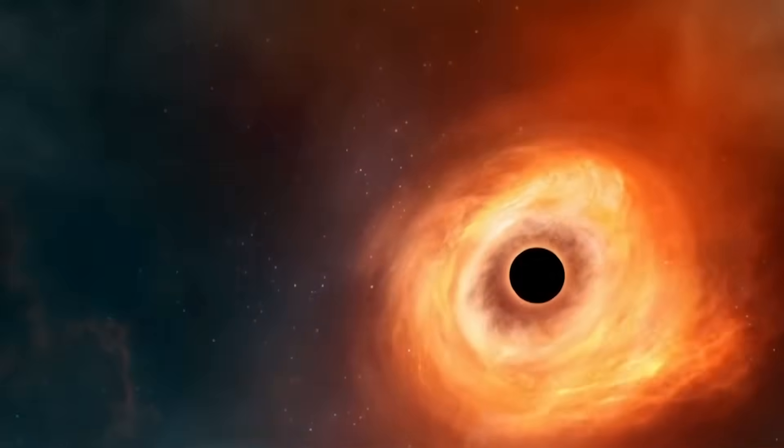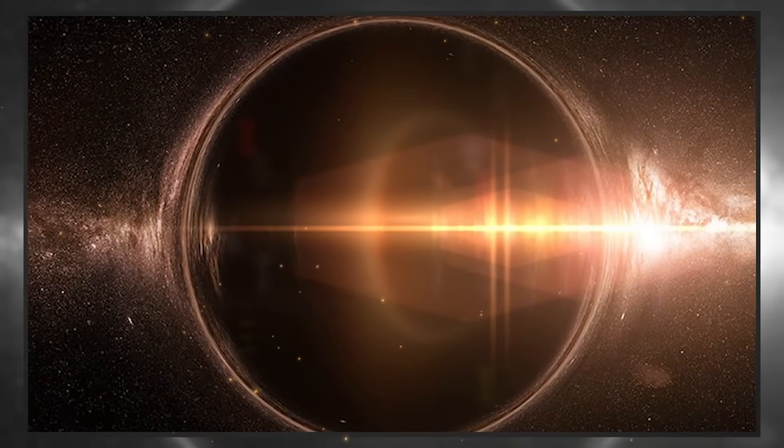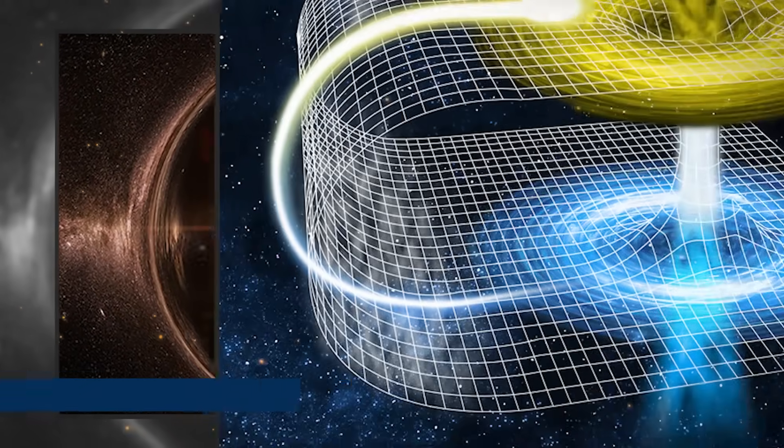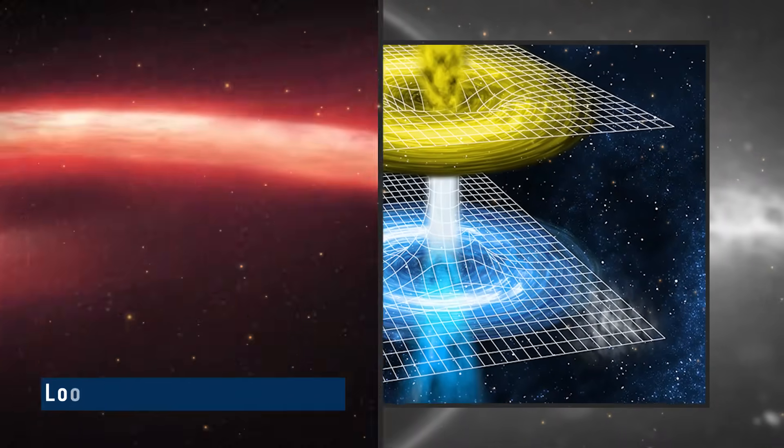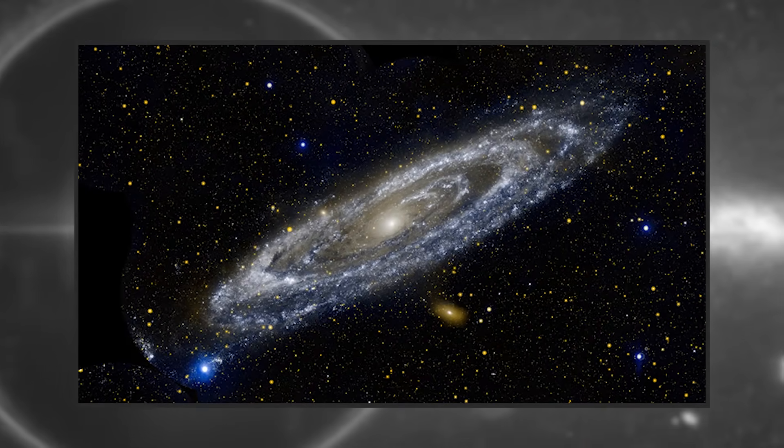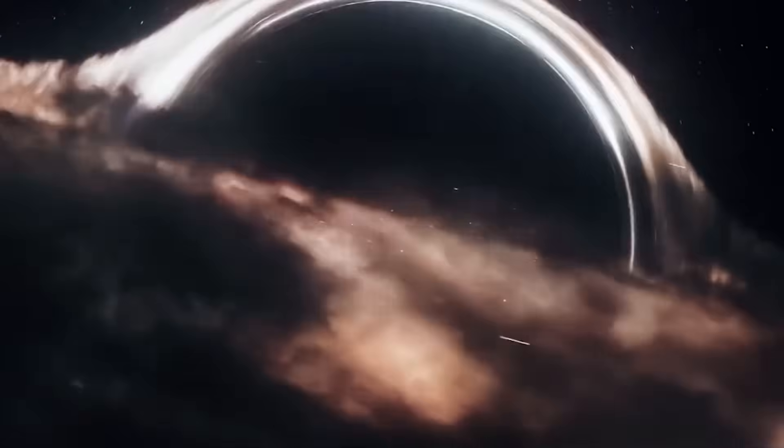To really understand what happens inside a black hole, we need more than Einstein's equations. That's where quantum gravity steps in, a kind of super science that blends gravity with the rules of tiny particles. One major idea is loop quantum gravity, LQG. It flips how we think about space and time. Instead of being smooth and continuous, LQG says space-time is made of tiny loops, like atoms of space. At the smallest scale, the fabric of the universe is chunky.